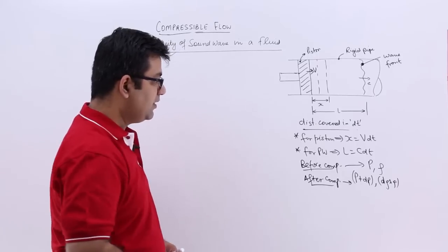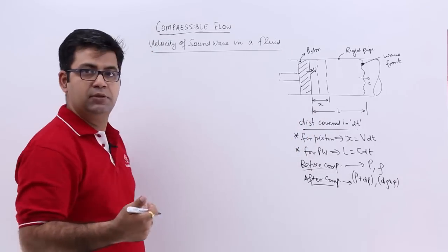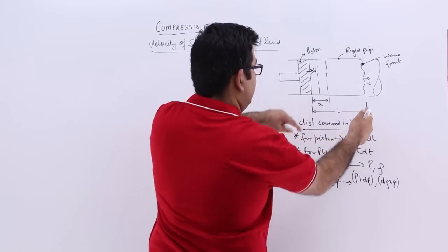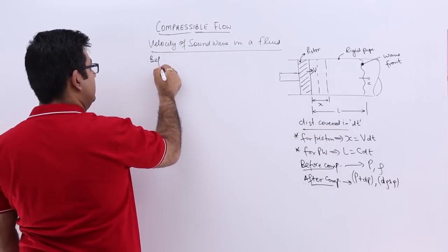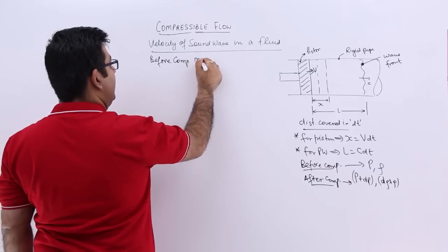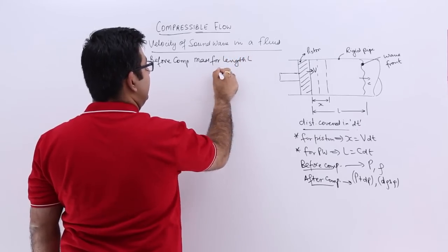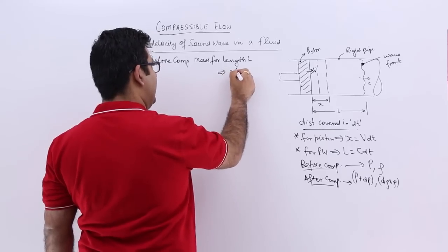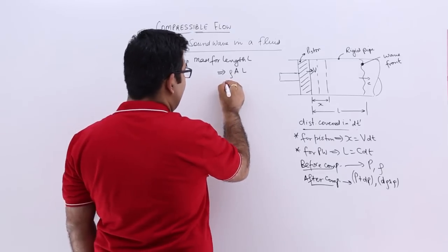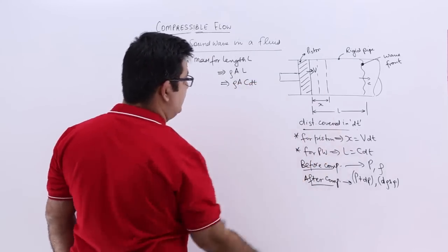Now let us look at the continuity equation. The mass of the fluid before compression for length L would be rho into area into length. This can be written as rho A times c dt, because L is equal to c dt.